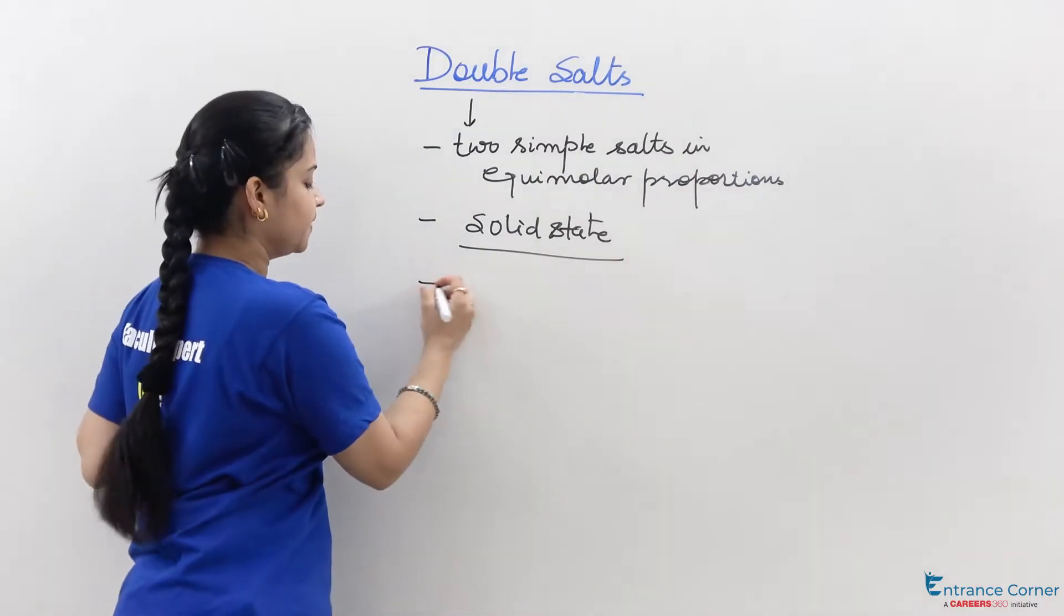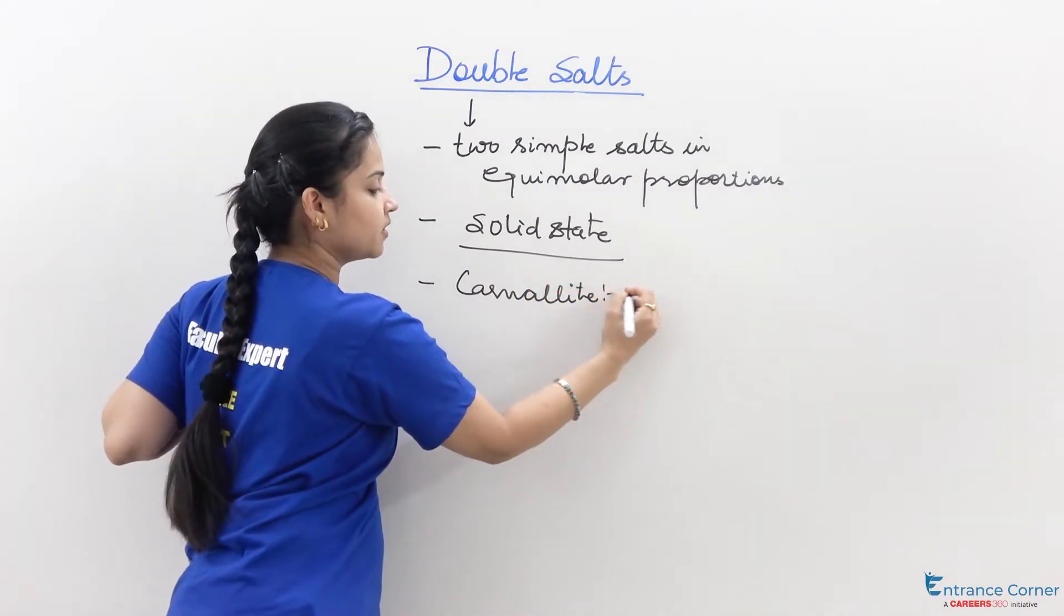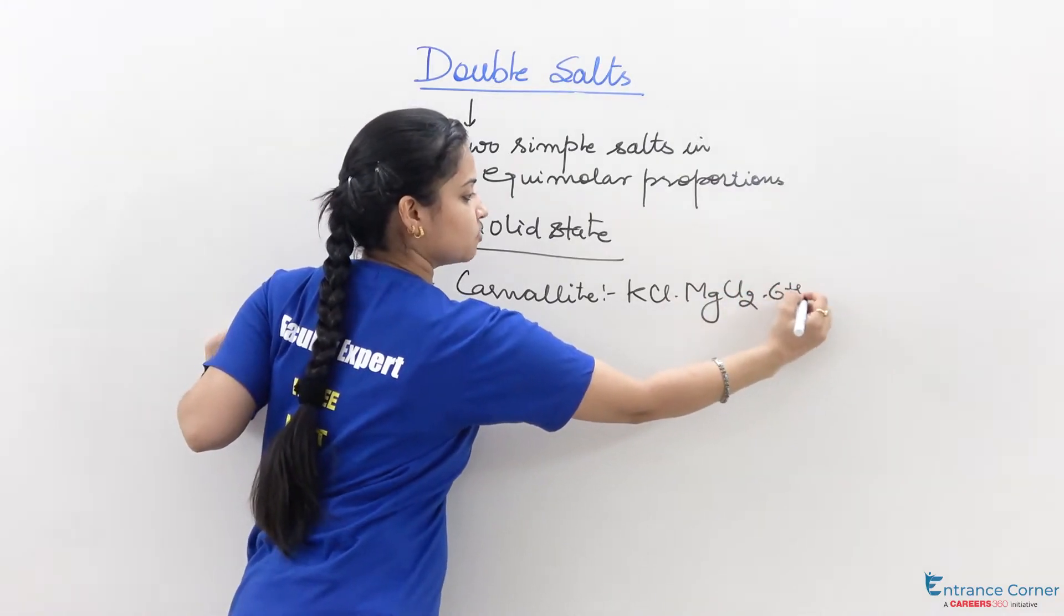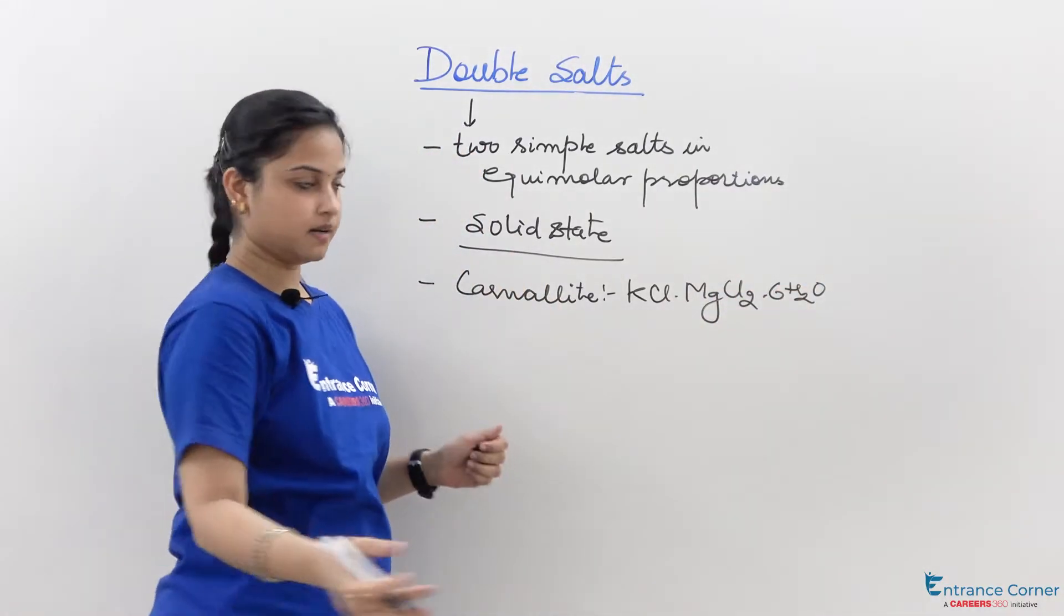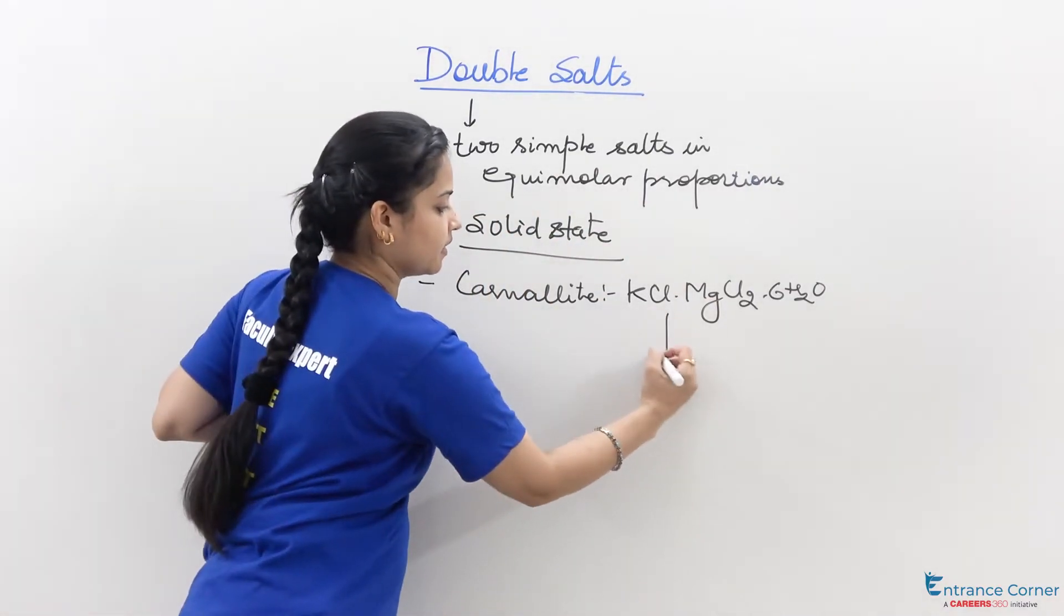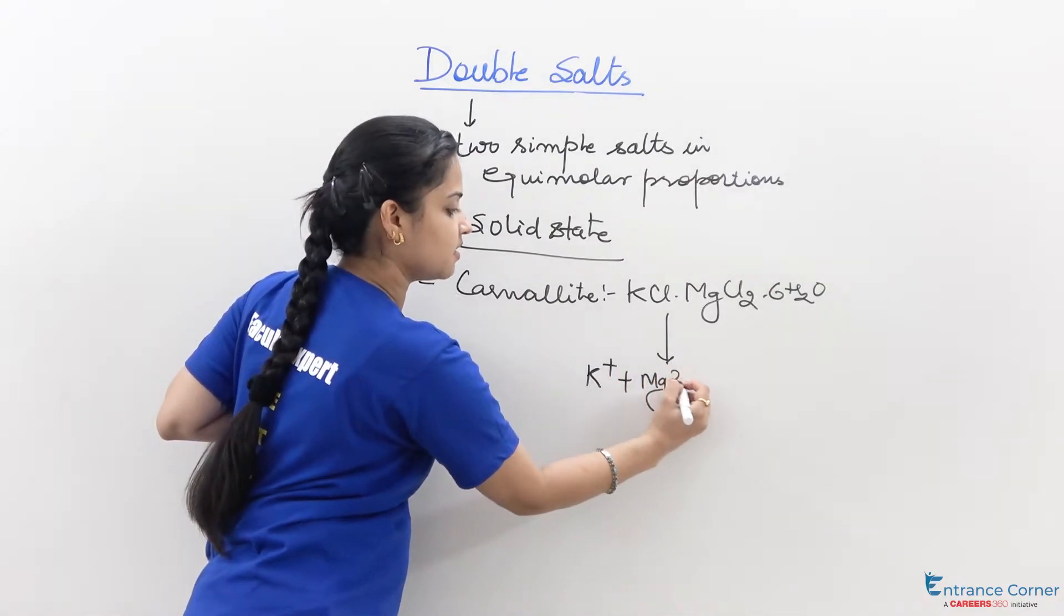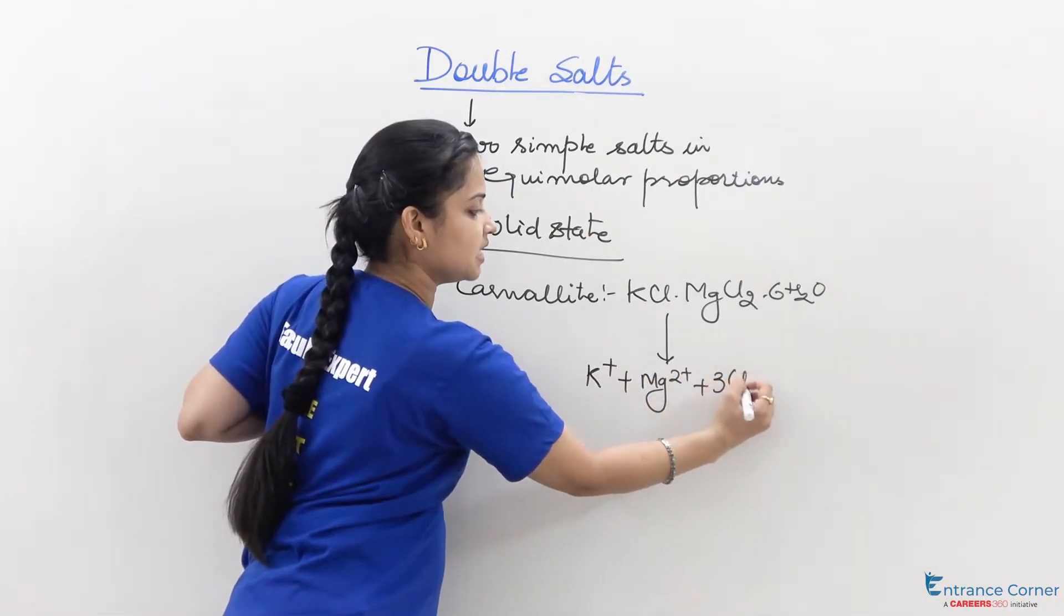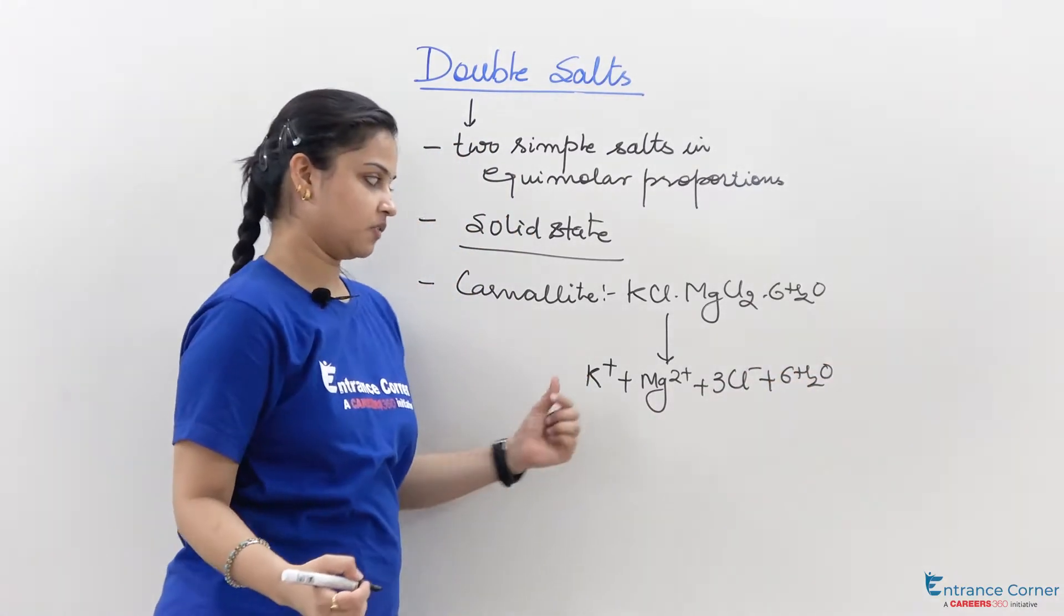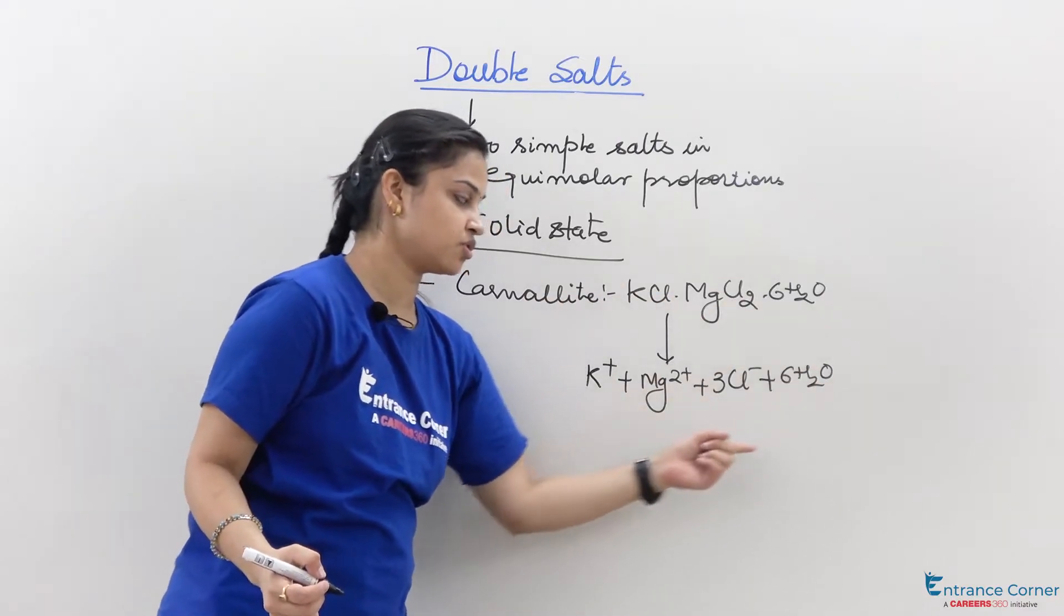For example, carnalite is a double salt having the formula KCl.MgCl2.6H2O. In aqueous state it will completely dissociate into ions: K+ plus Mg2+ plus 3Cl- plus 6H2O. So in aqueous state it will dissociate completely.